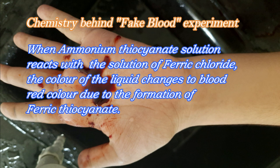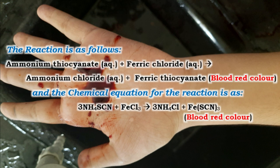The chemistry behind the fake blood experiment: when ammonium thiocyanate solution reacts with the solution of ferric chloride, the color of the liquid changes to blood red due to the formation of ferric thiocyanate. The reaction is as follows: ammonium thiocyanate plus ferric chloride gives ammonium chloride plus ferric thiocyanate. The chemical equation is: 3 NH4SCN + FeCl3 → 3 NH4Cl + Fe(SCN)3.